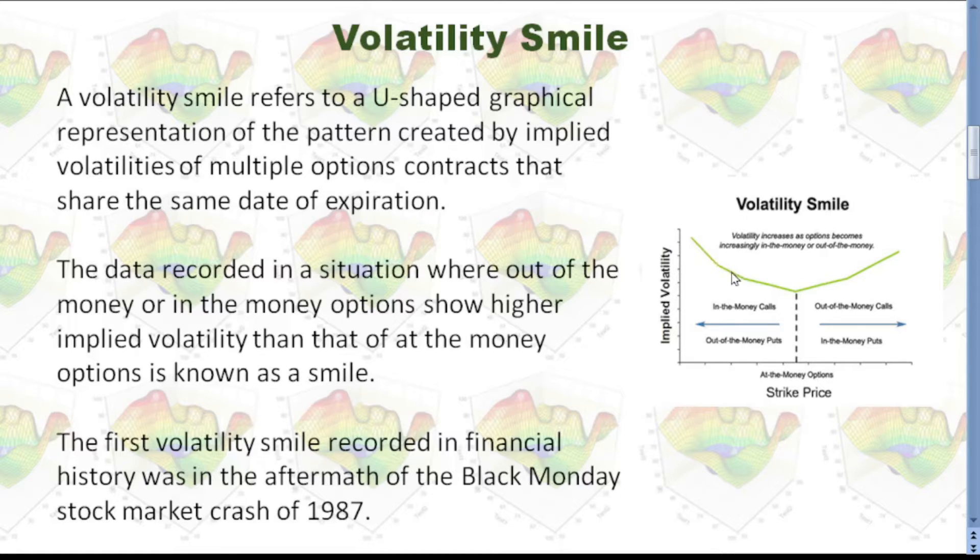If you draw a graph, it will look like this. A volatility smile refers to a U-shaped graphical representation of the pattern created by implied volatility of multiple option contracts that share the same date of expiration but with different strike prices. Because this shape looks like somebody is smiling, we call it volatility smile.